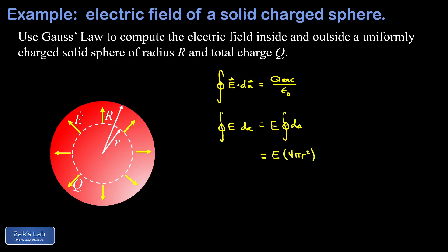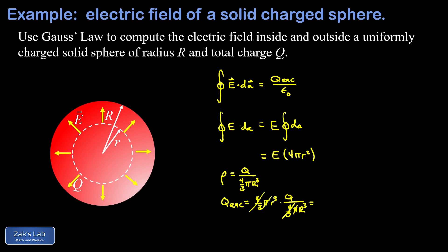On the right-hand side of Gauss's Law, Q_enclosed is tricky — we're only enclosing a fraction of the sphere's total charge. We introduce the volume charge density ρ, which is charge per cubic meter. For this uniformly charged sphere, ρ = Q / (4/3 · π · R³). Multiplying ρ by the volume of the smaller Gaussian surface gives Q_enclosed = Q · r³ / R³.